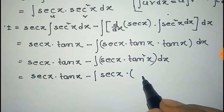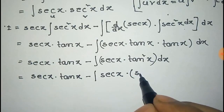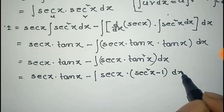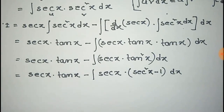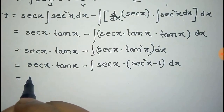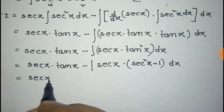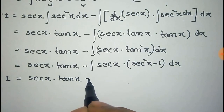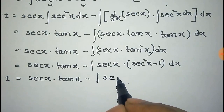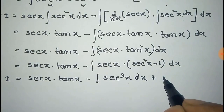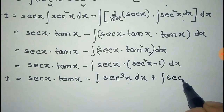We can write tan square x as sec square x minus 1 into dx. Multiplying sec x with the elements of the bracket, it will give sec cube x dx plus integration of sec x dx.